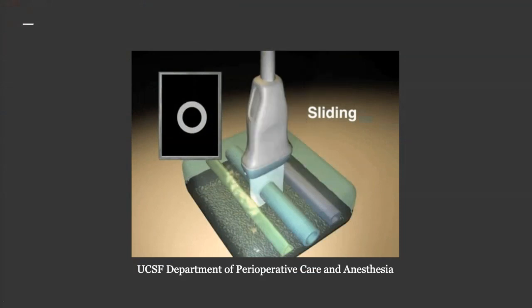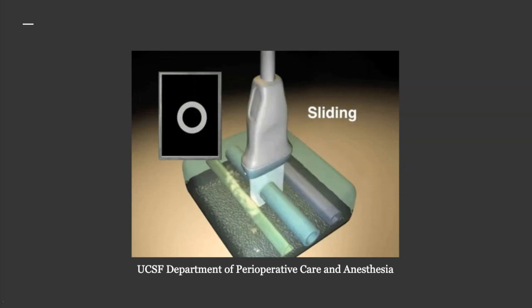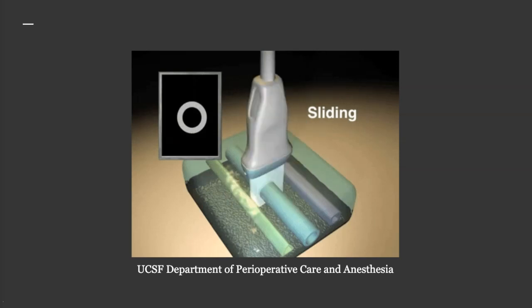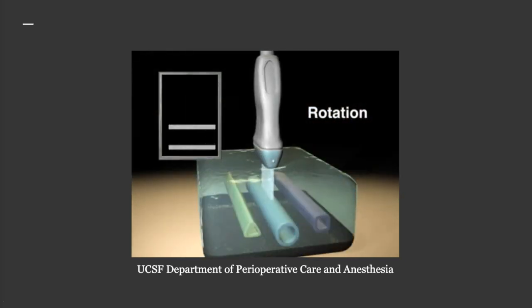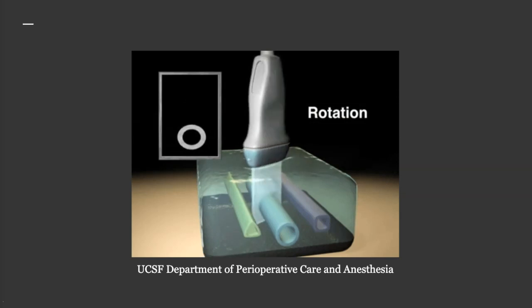I always tell patients that I'm looking for black holes on the screen. As you slide the probe up and down the arm, you're holding the probe perpendicular to the lie of the vein, and that corresponds to a circle on the screen. You can also rotate the probe so it is parallel to the veins, and that changes how it looks on the screen.